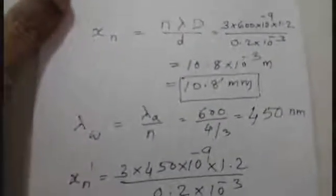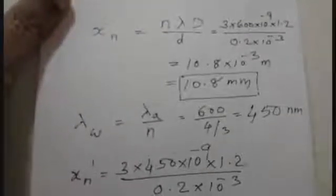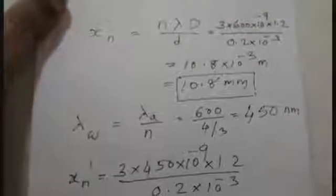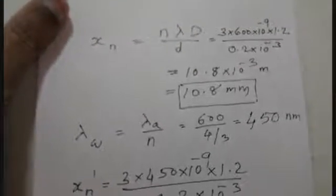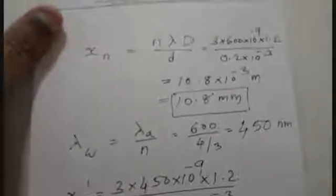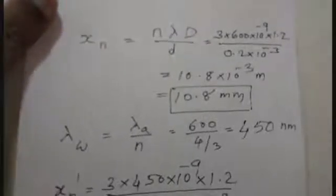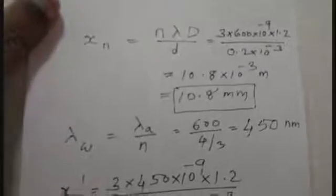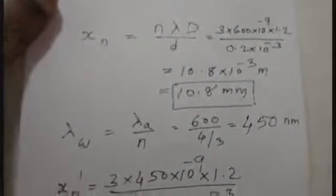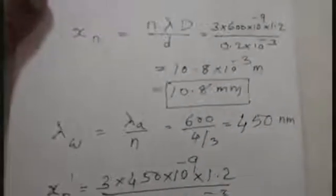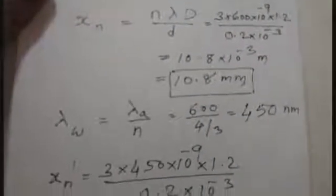For part one: N = 3, λ = 600 nm = 600 × 10⁻⁹ m, D = 1.2 m, d = 0.2 mm = 0.2 × 10⁻³ m. The fringe distance = N·λ·D / d = 3 × 600×10⁻⁹ × 1.2 / (0.2×10⁻³) = 10.8 × 10⁻³ m = 10.8 mm.